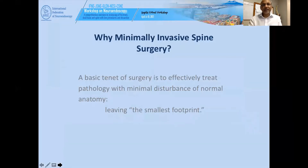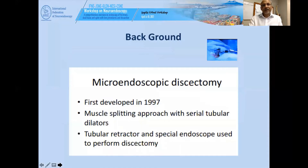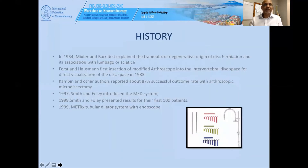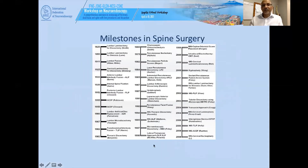Why MIS? It's the basic tenet of surgery to effectively treat pathology with minimal disturbance of normal anatomy — leaving the smallest footprint. Micro endoscopic discectomy, first developed in 1997, is a muscle-splitting approach with serial tubular dilators, a tubular retractor, and a special endoscope used to perform discectomy. Mixter and Barr first described discectomy back in 1934, and the matrix tubular dilator system with endoscope came in 1999. Smith and Foley introduced the MED system in 1997, marking a gradual move into the minimally invasive era.